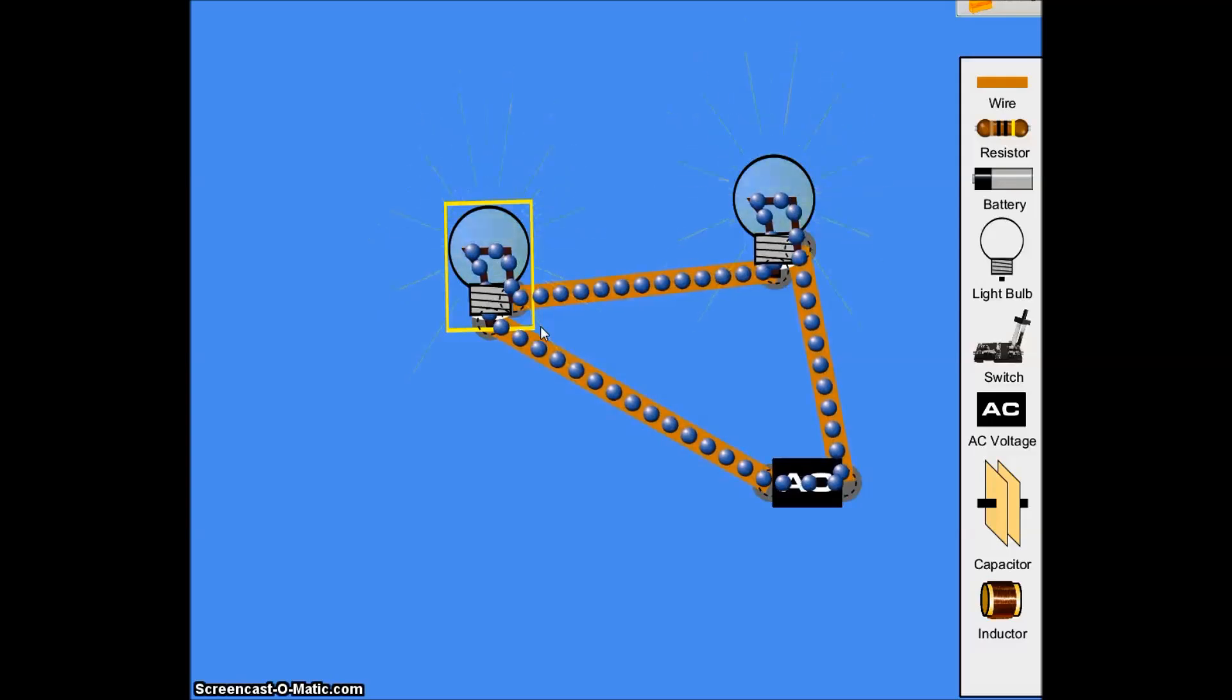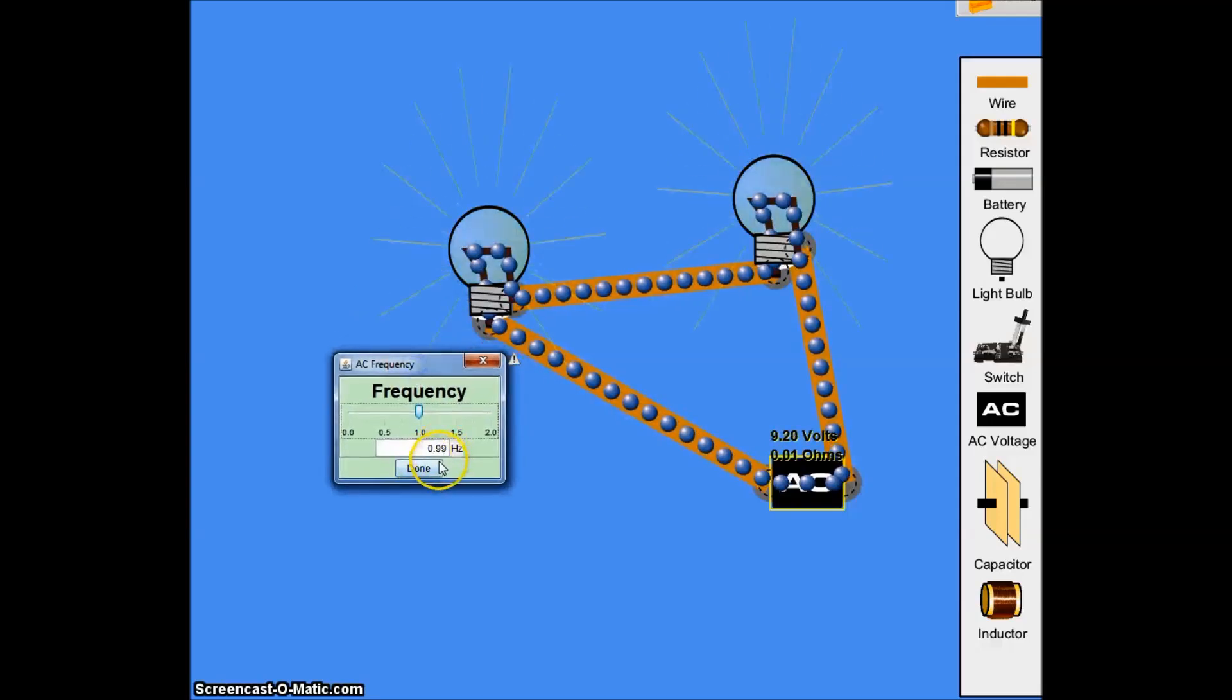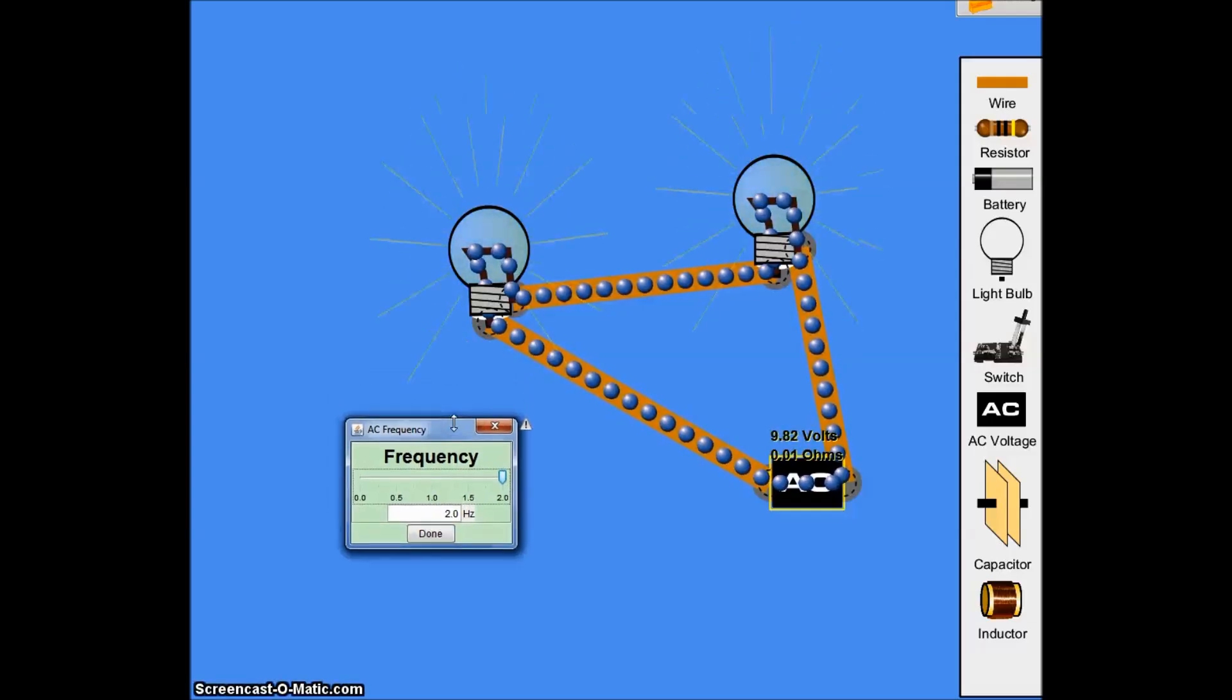So remember, we talked about alternating current is 60 hertz, it changes 60 times per second. This, our little AC battery here, is only going about one time every second. We can bump it up to two times a second, that's the most that the program can hold. So we can see that they're flashing a lot quicker now.